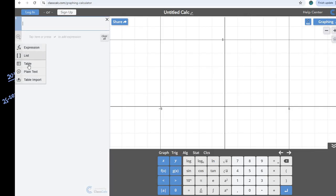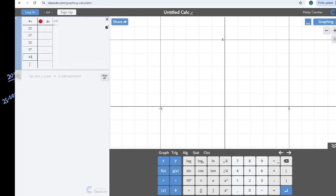And then I'm going to create a table, and in x1, I am going to put my midpoint, so the 22, 27, 32, 37, 42, and 47. And in my y1, I'm going to put my frequencies. And that's all I have to do is I put the data in there.